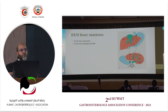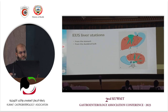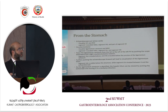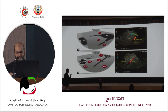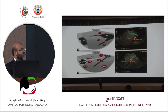When doing EUS, you have two stations: from the stomach and from the duodenal bulb, each seeing different segments. From the stomach, starting just below the cardia, you can see the IVC and right hepatic vein, giving views of segments 1, 8, and part of 7. With clockwise rotation, the ligamentum venosum comes into view, and pushing forward reveals the middle hepatic vein and additional segments.